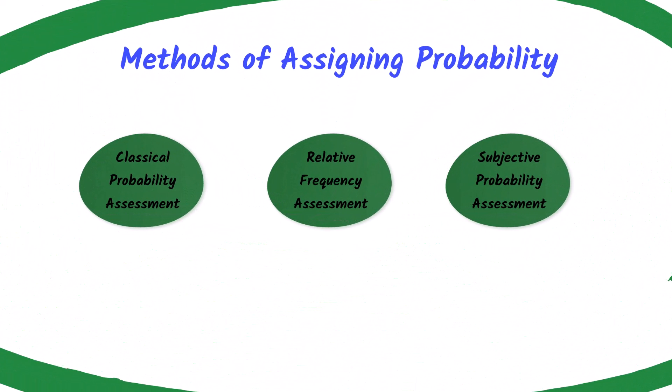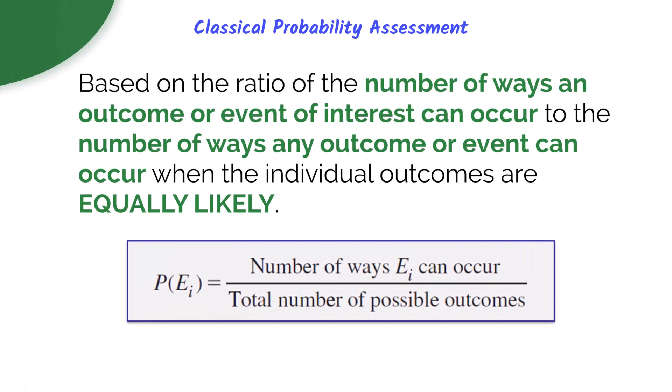Let's talk about the three different methods for assigning probability: classical, relative, and subjective. The symbol P(Ei) represents the probability of event of interest Ei occurring. With classical probability assessment, this is based on the ratio of the number of ways an outcome or event can occur, and it assumes that all individual outcomes are equally likely — like rolling a six-sided die where all six sides are equally likely. The way we calculate it is: the number of ways the event of interest can occur divided by the total number of possible outcomes.